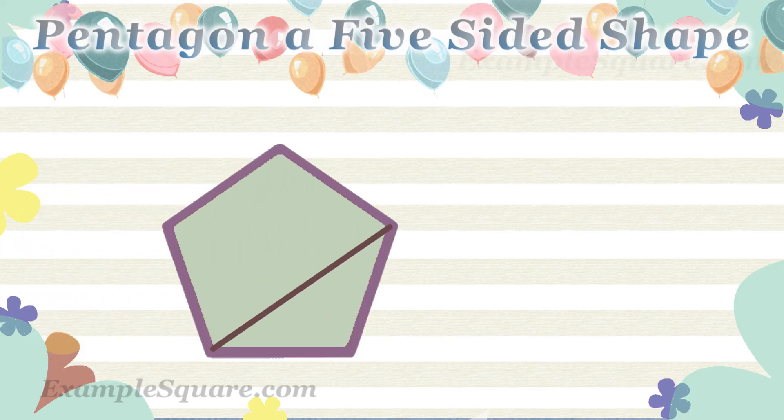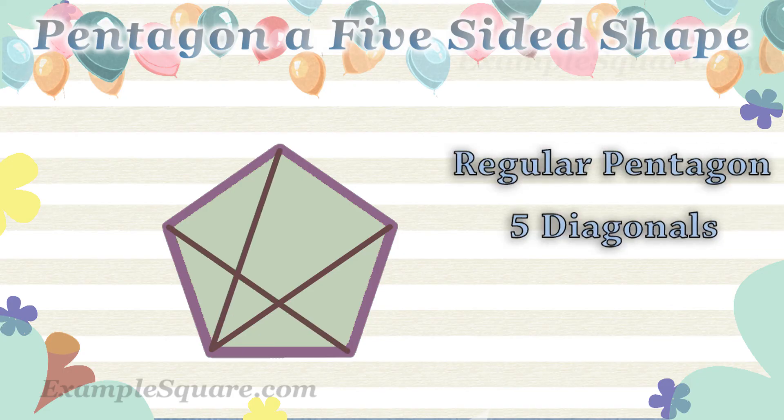A regular pentagon has five diagonals. A diagonal is a line joining two non-adjacent vertices.